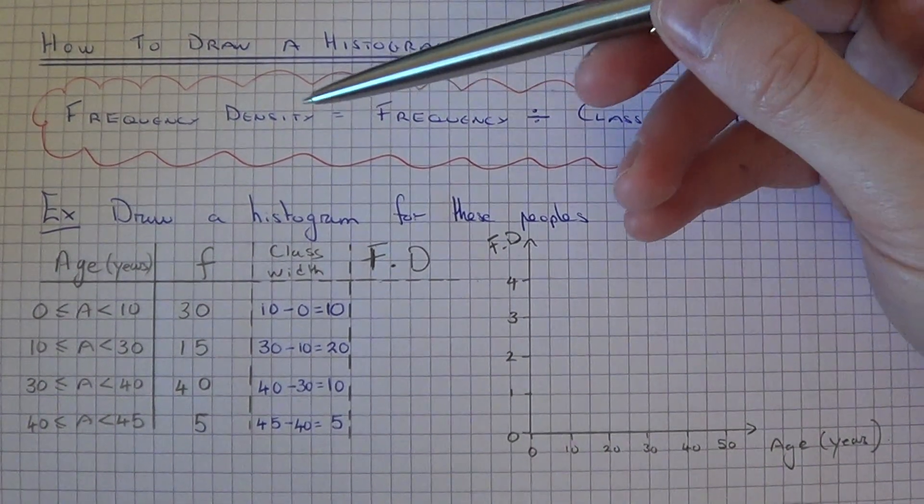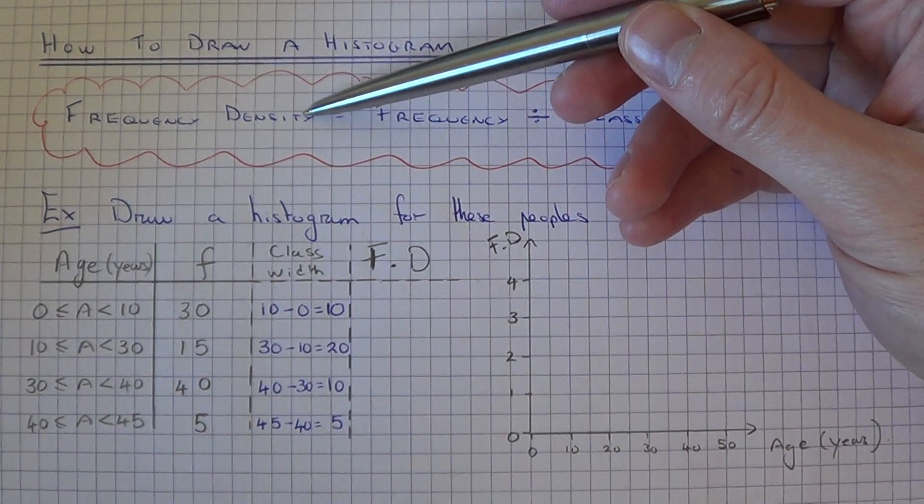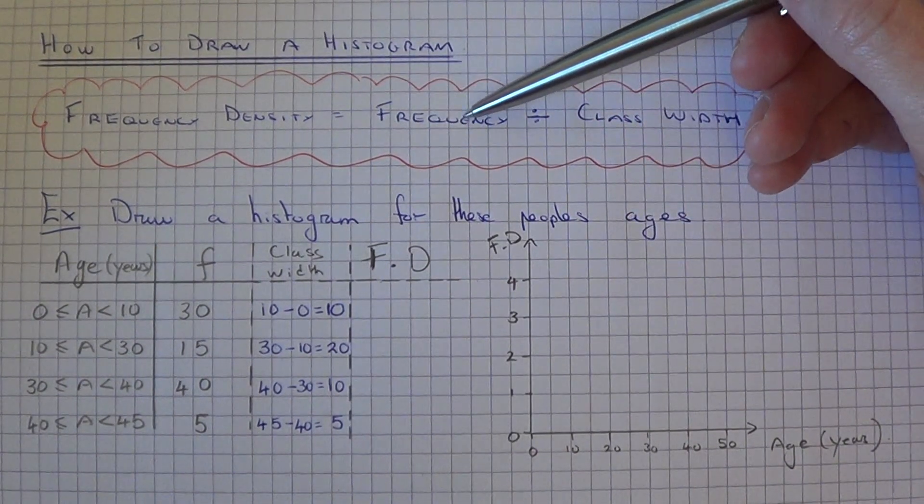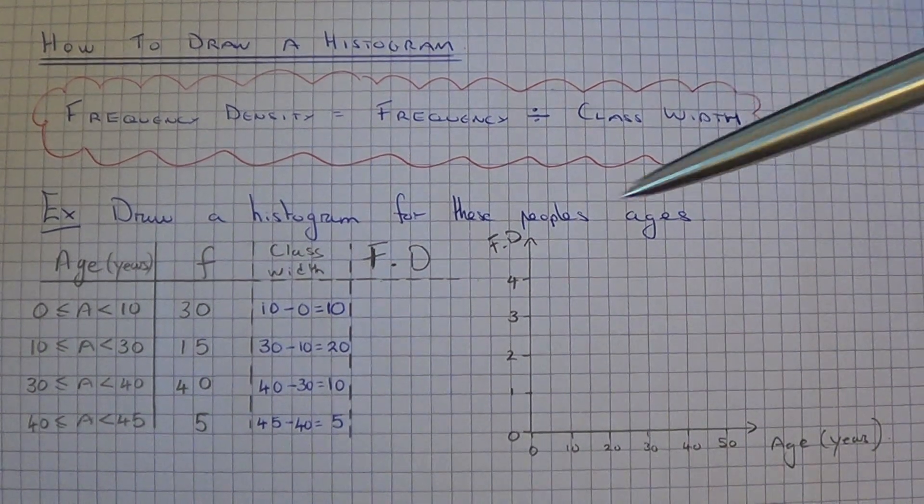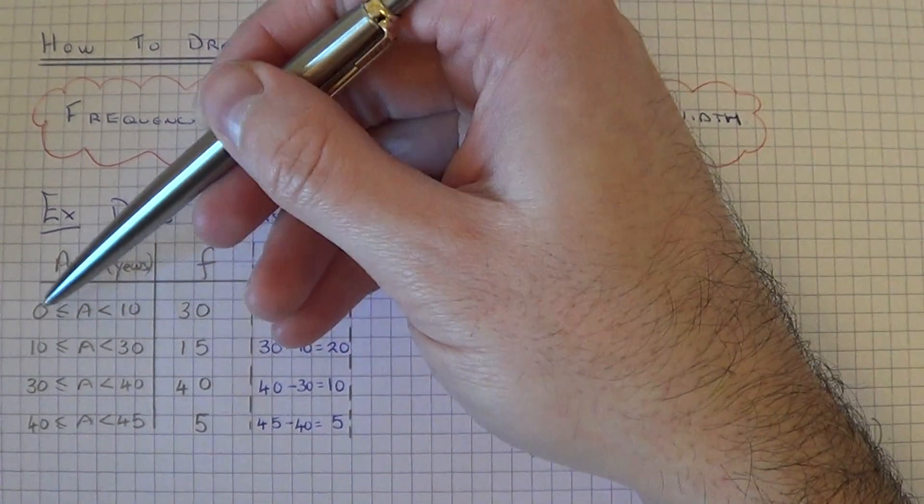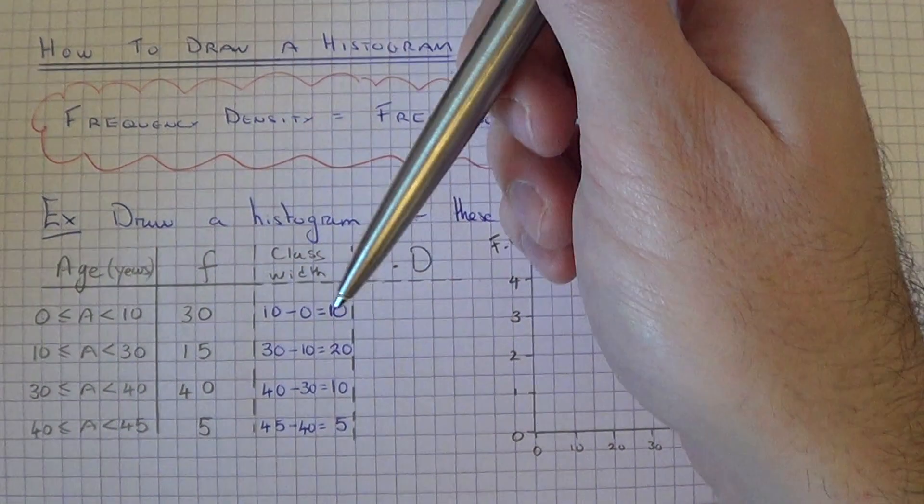First of all, you will need to work out the frequency density, and this can be found by dividing the frequency by the class width. The class width is the difference between the upper limit and the lower limit of each group.